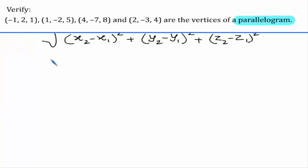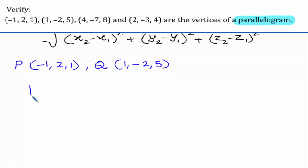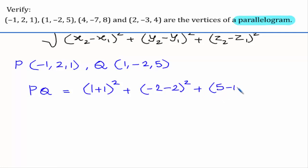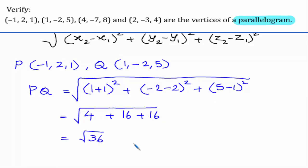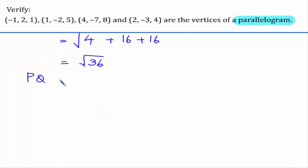Let us consider P as (-1, 2, 1) and Q as (1, -2, 5). PQ equals the square root of (1 minus of minus 1, plus 1) whole square plus (minus 2 minus 2) whole square plus (5 minus 1) whole square. This is: 2 squared is 4; minus 4 squared is 16; 4 squared is also 16. We get square root of 36, that is PQ equals 6 units.